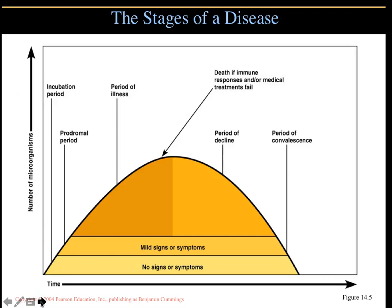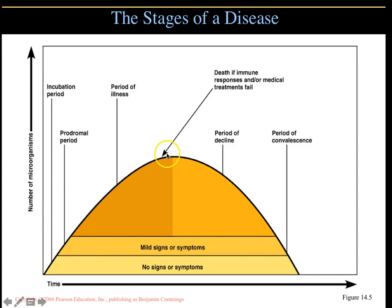The stages of disease follow a bell-shaped curve plotting number of pathogens over time. The incubation period is when the person has no signs or symptoms and may feel slightly off. Mild signs and symptoms are called the prodromal period. This is followed by the period of illness — if the immune system or drugs cannot resolve it, the person could die. If responding, there is a period of decline and then a period of convalescence.